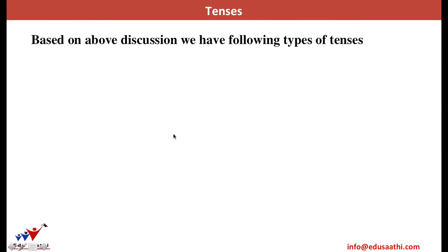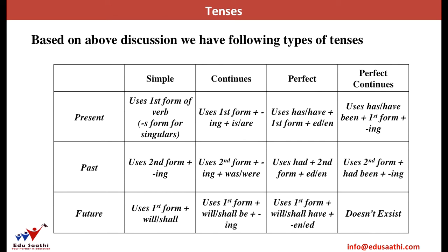If we multiply the three forms of time by the four forms of the status of work, we get twelve different kinds of tenses. Taking the permutation and combination of all of them, we get simple present, present continuous, present perfect, present perfect continuous. Likewise we have simple past, past continuous, and so on and so forth. On similar lines we have future tense as well. We will discuss them one by one.